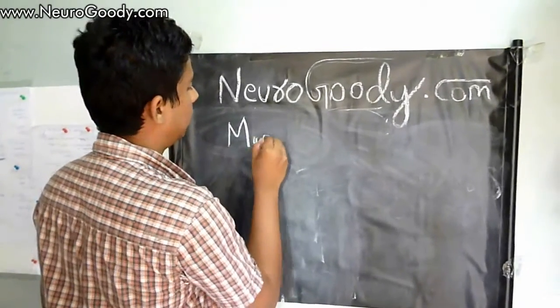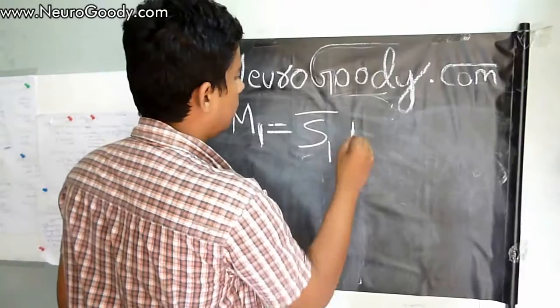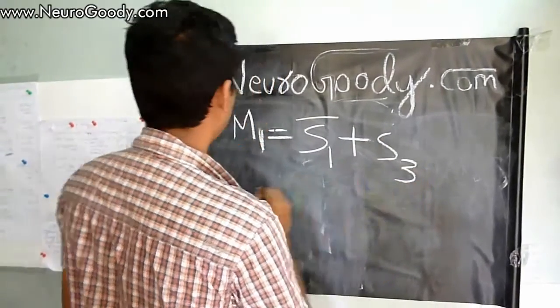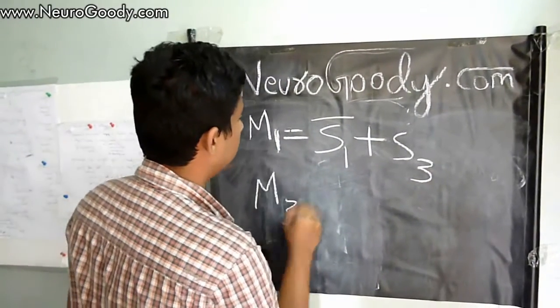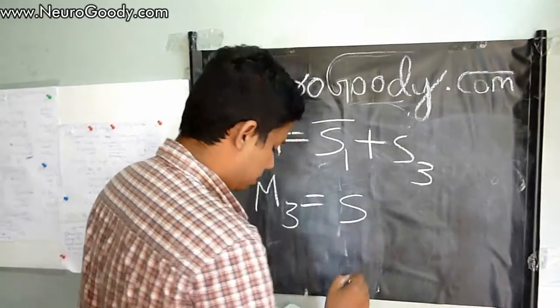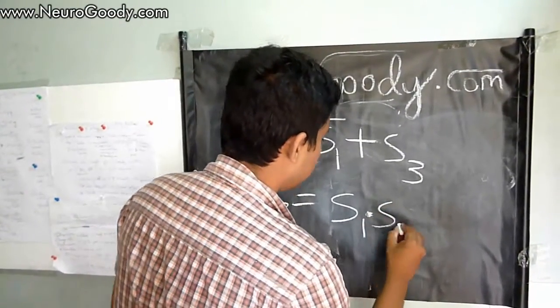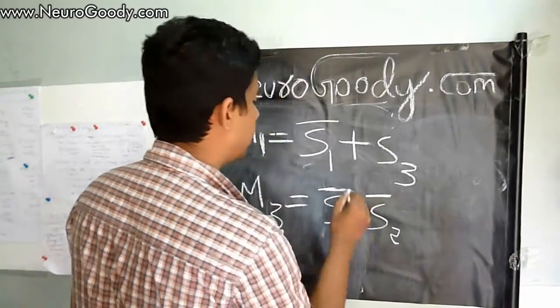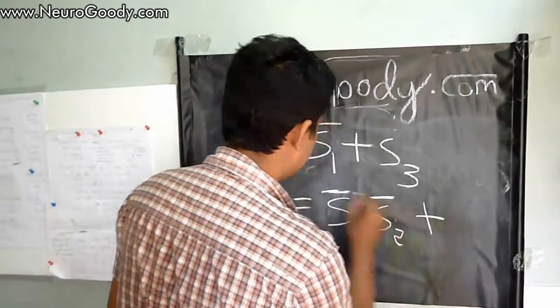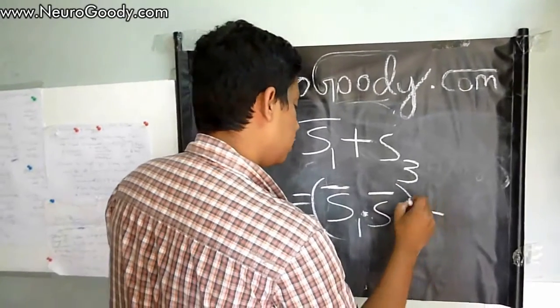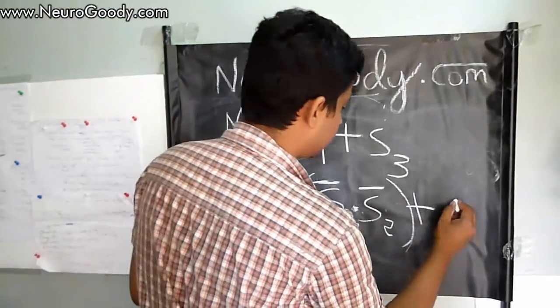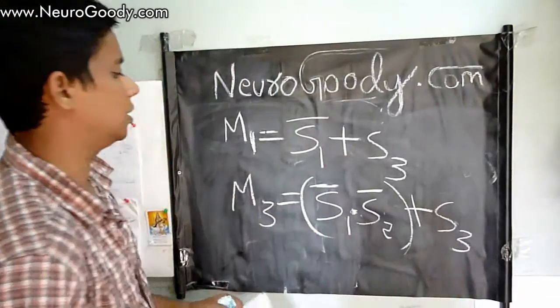After going through the post below, you will be arriving at a logical expression of m1 as m1 equals s1 bar plus s3, and then m3 will be s1 and s2 bar, plus s1 bar and s2 bar. This is the actual logical expression of these two output variables.